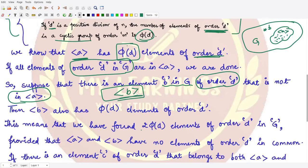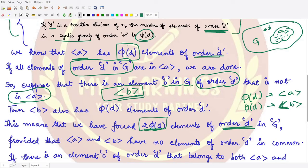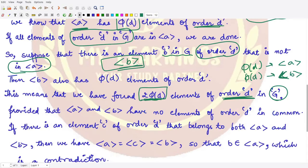So the group generated by b also has φ(d) elements of order d. This means we have found 2·φ(d) elements of order d — φ(d) from the subgroup generated by a and φ(d) from the subgroup generated by b. This total of 2·φ(d) is valid whenever the two subgroups have no elements of order d in common; otherwise it would be less than 2·φ(d).